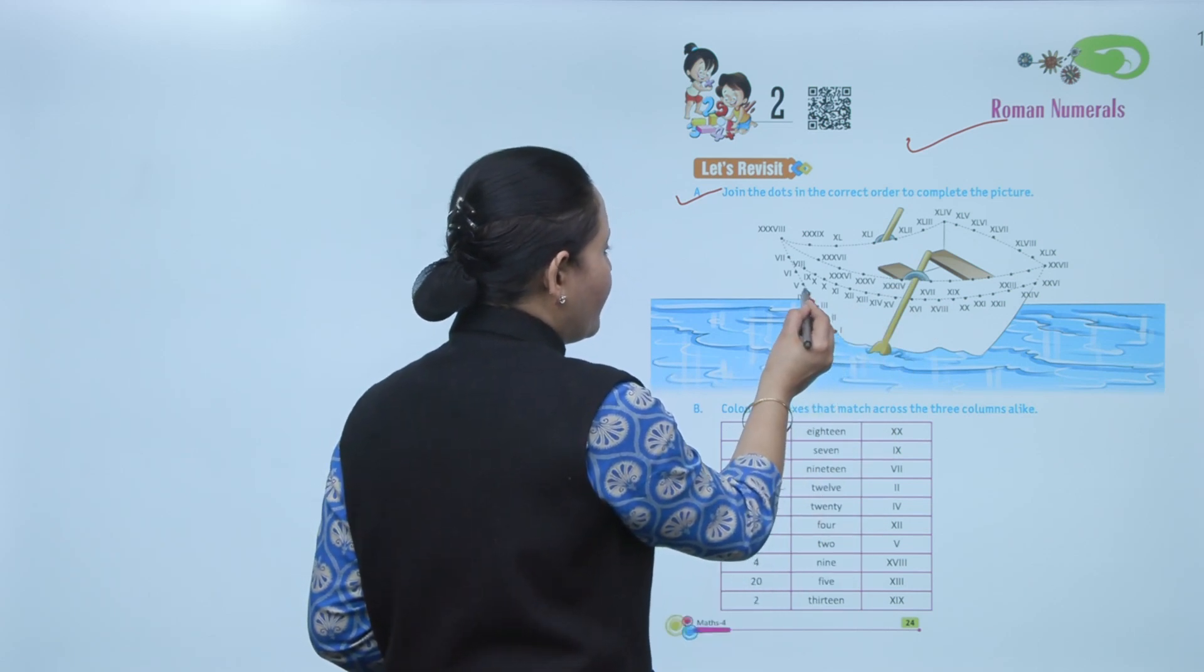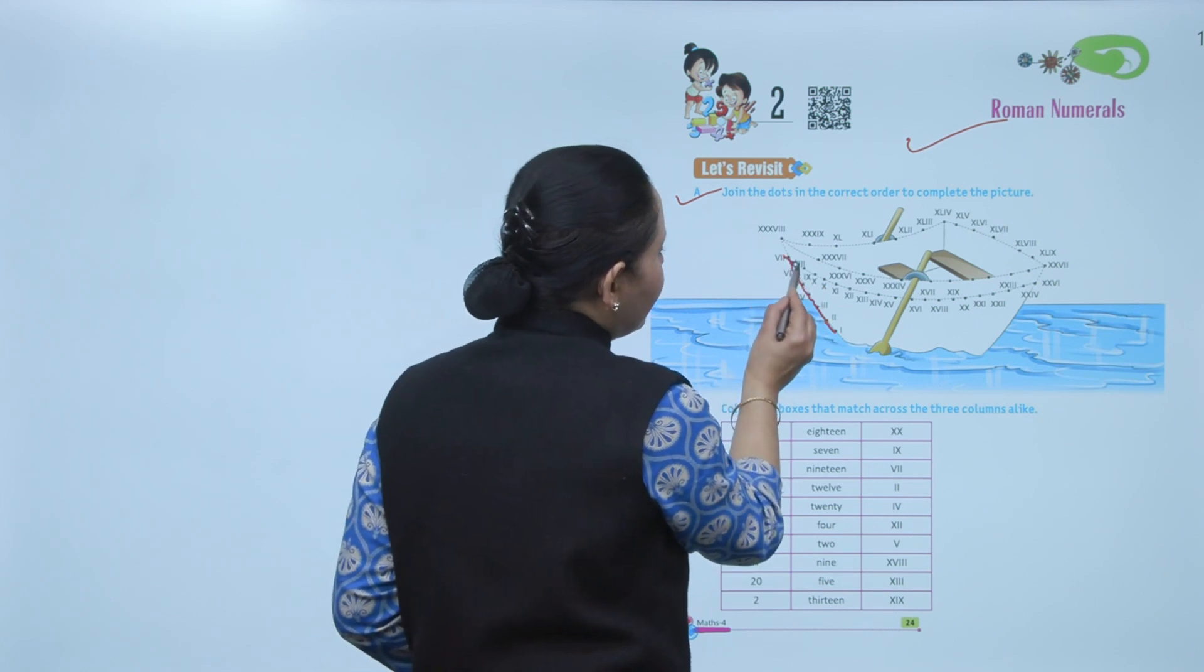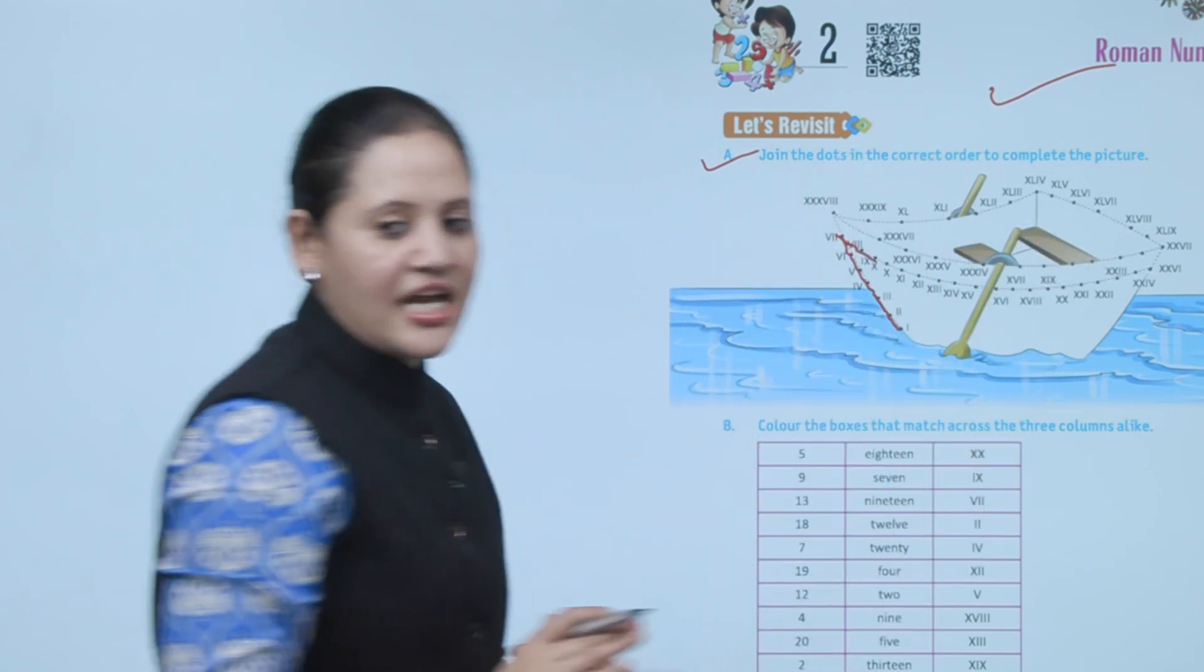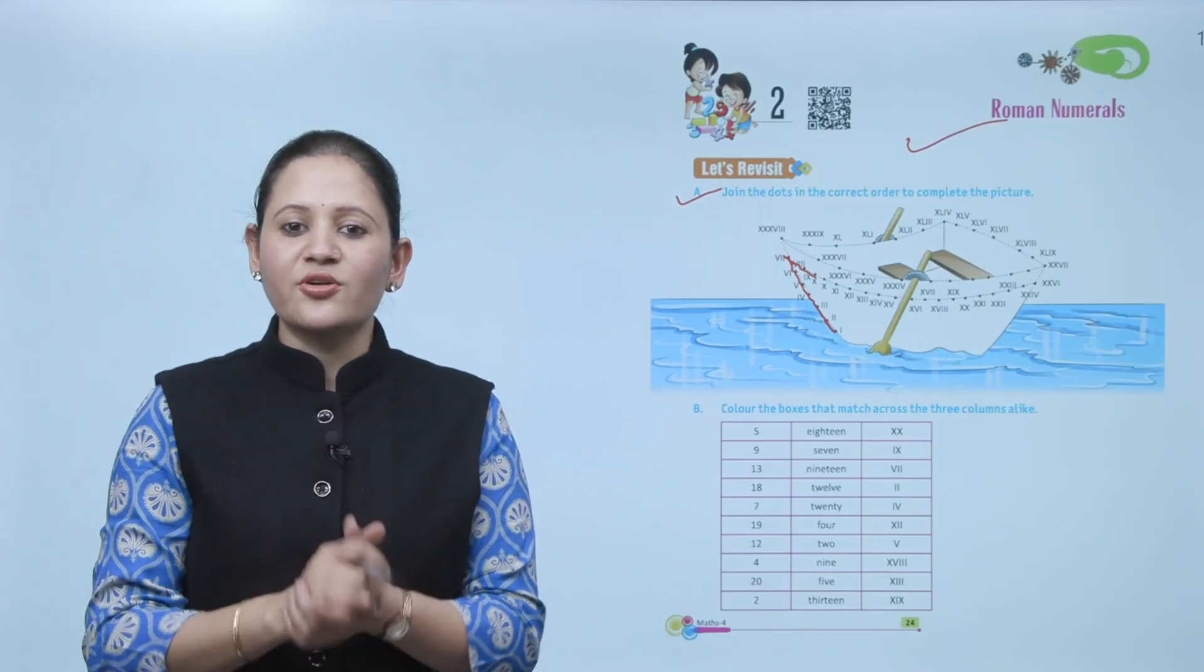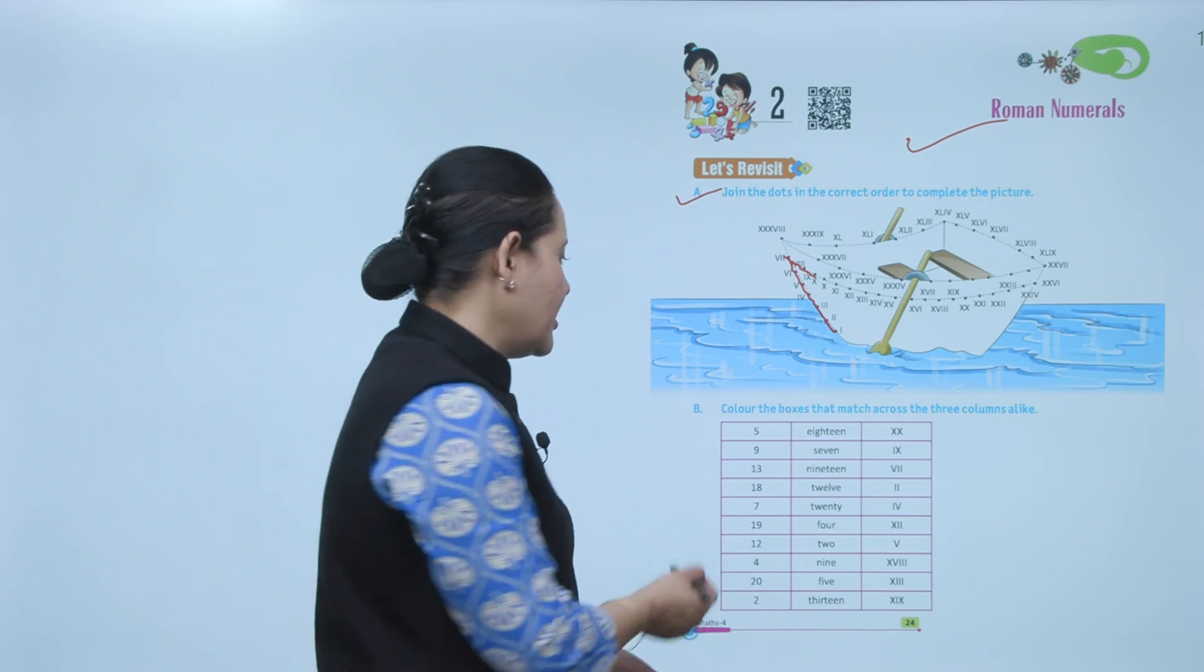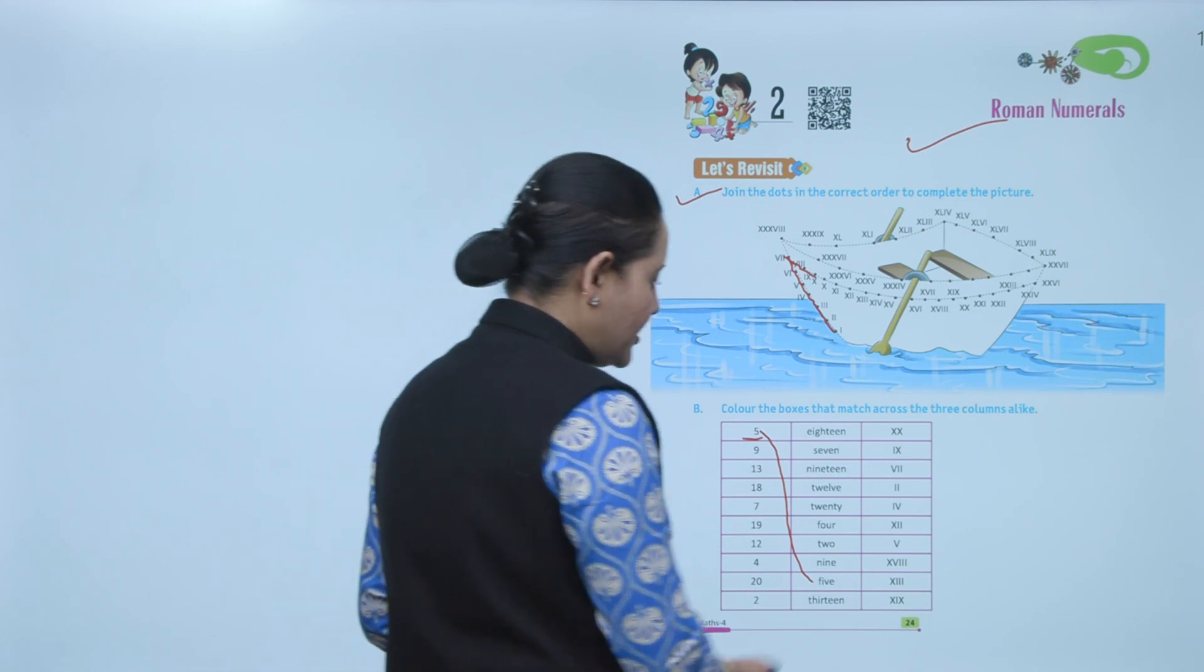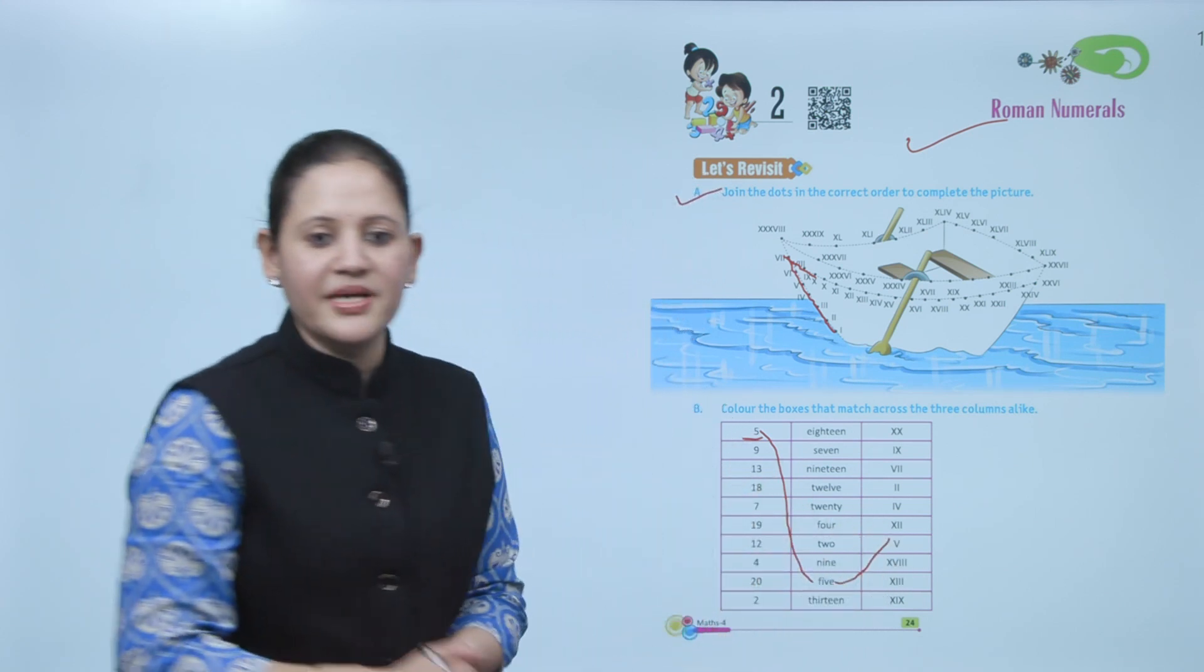So start from 1, 2, 3, 4, 5, 6, 7, then 8, 9, 10. Like this you have to follow the order and join the dots and complete the picture. Clear? Next is color the boxes that match across the three columns alike. Here it is number 5, so where is number 5? Like this. And in Roman numerals this is number 5, so like this we'll match them.